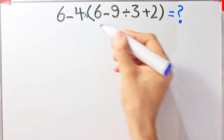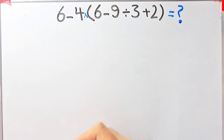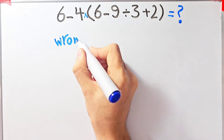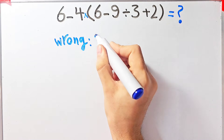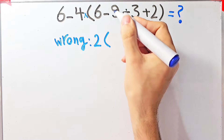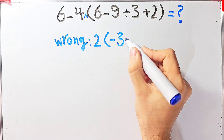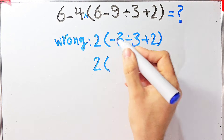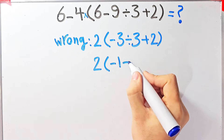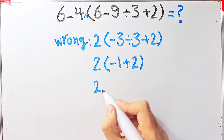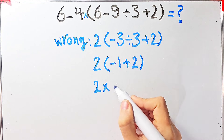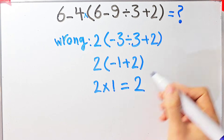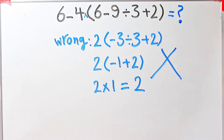Some people solve this question like this: they say six minus four equals two, then two times six minus nine, which equals negative three, then divided by three, then plus two. Two times negative three divided by three equals negative one, then plus two. Negative one plus two equals one, and two times one equals two.